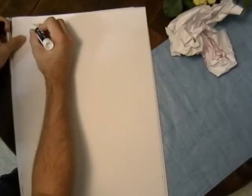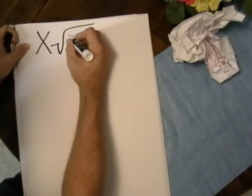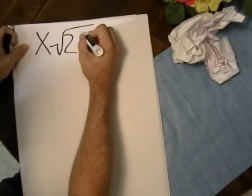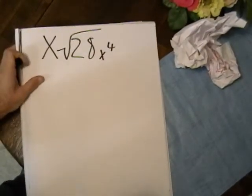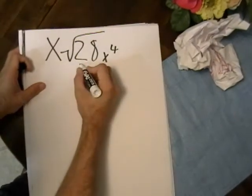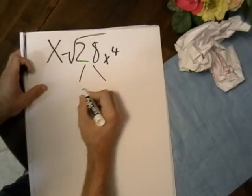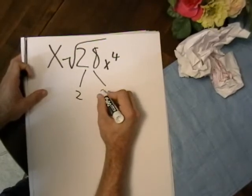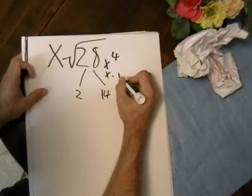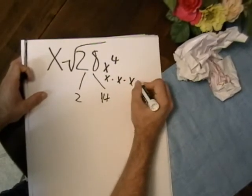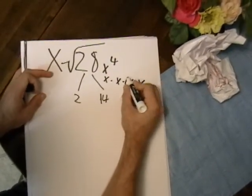We're going to do one final example. This is going to involve different coefficients as well as variables. This problem will be x times the square root of 28x to the 4th. So let's break down our factors here. We know that factors of 28 can be 2 times 14.